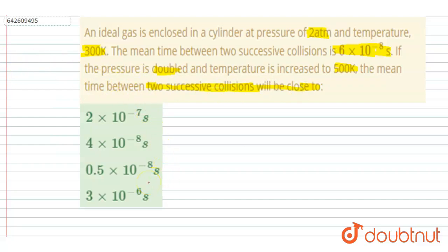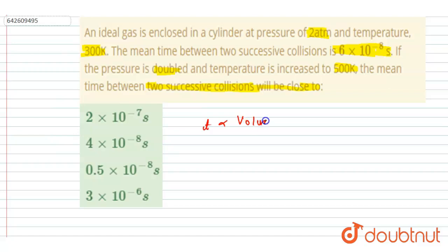We have to find out the mean time between two successive collisions when the pressure is doubled and temperature is increased to 500 Kelvin. We know that mean time is directly proportional to volume divided by velocity.